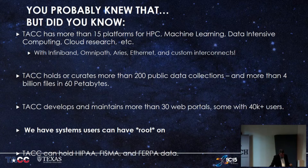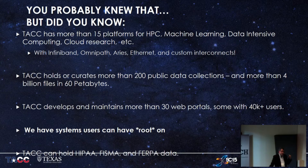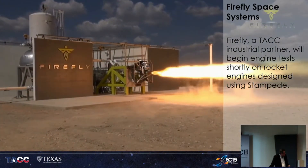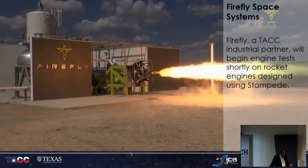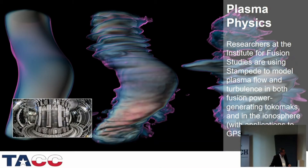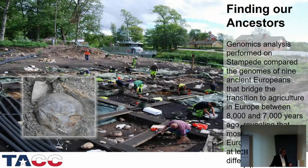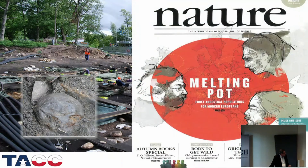We hold a whole bunch of data and run many different systems. We have one system called Chameleon where users get root — it's the world's greatest security nightmare. We also have HIPAA and FERPA data. And the reason we do all this is to do cool things, like build rocket engines — the Firefly stage booster was designed with Stampede. We do plasma fusion, genomic analysis. That genomic work was the cover of Nature.